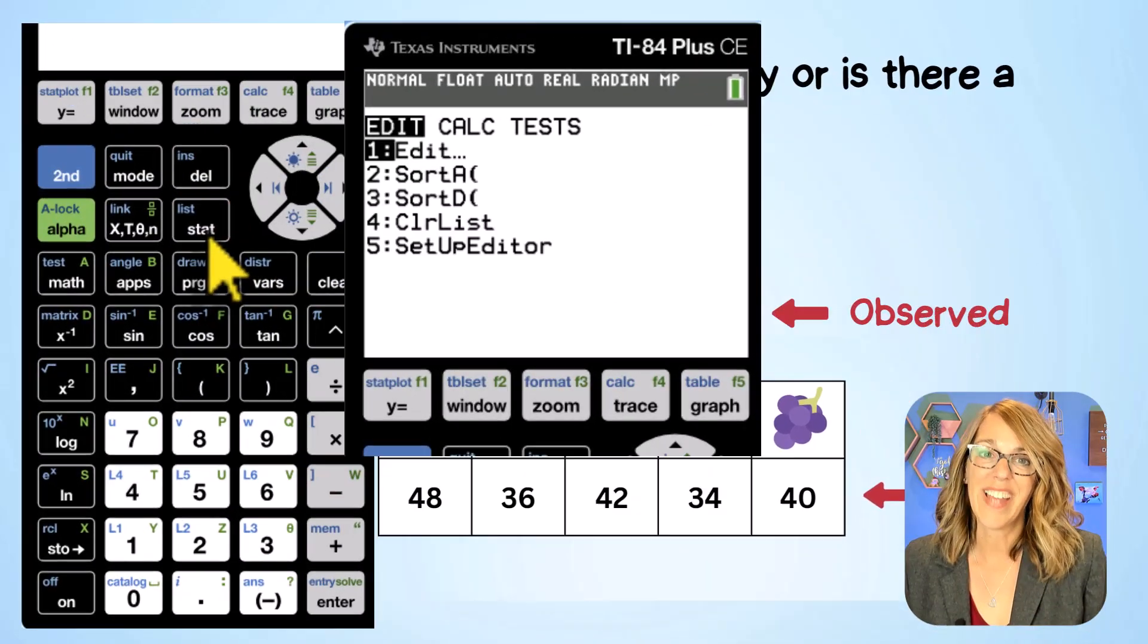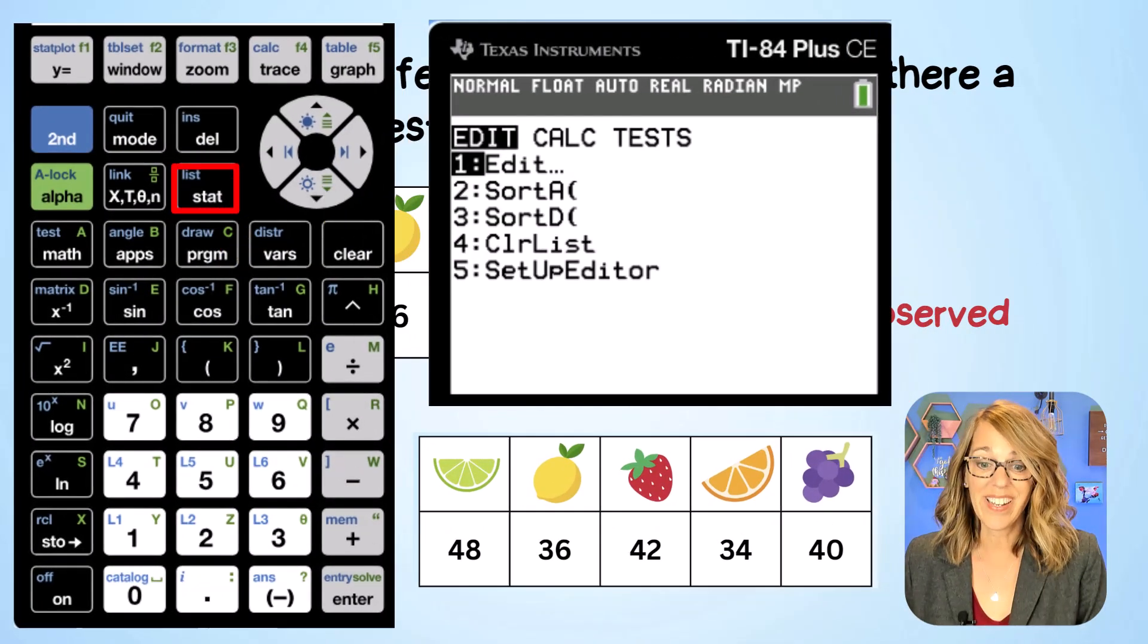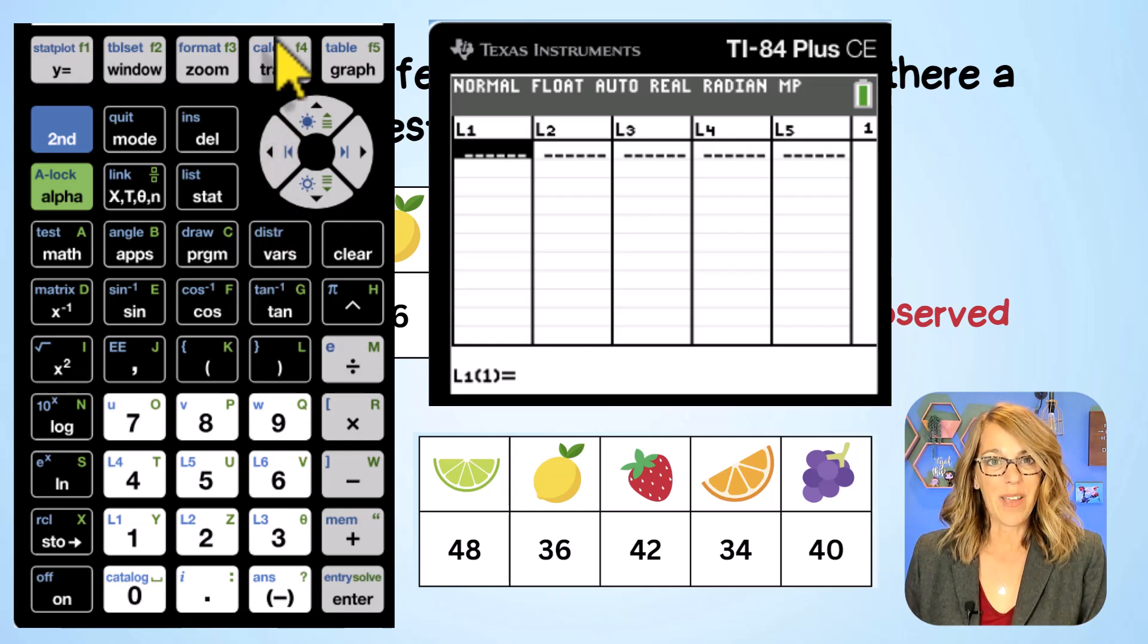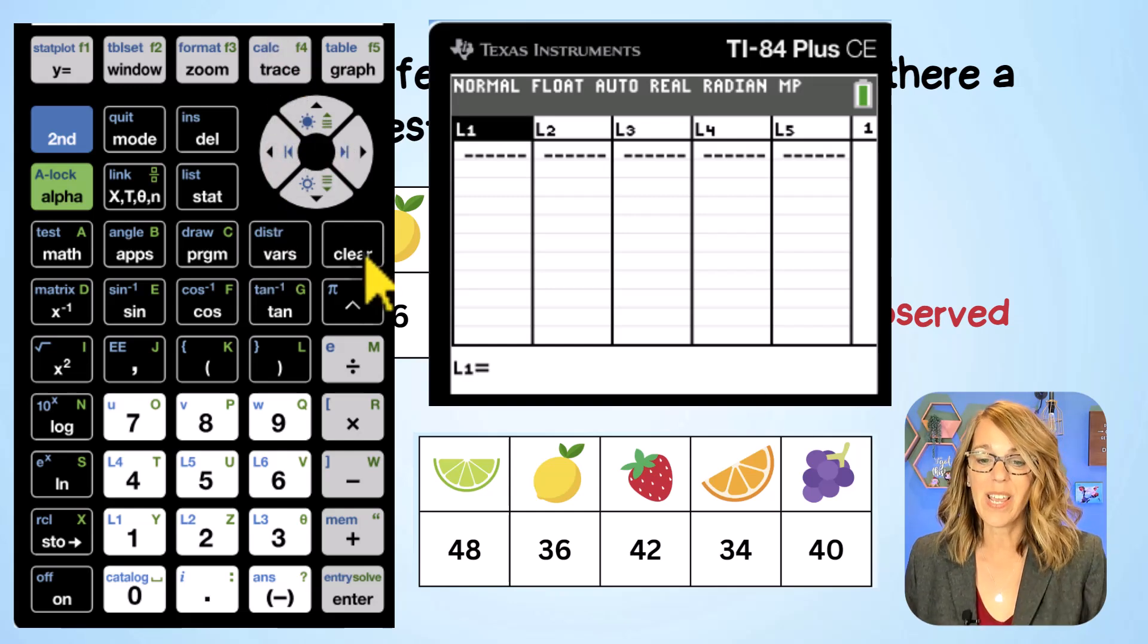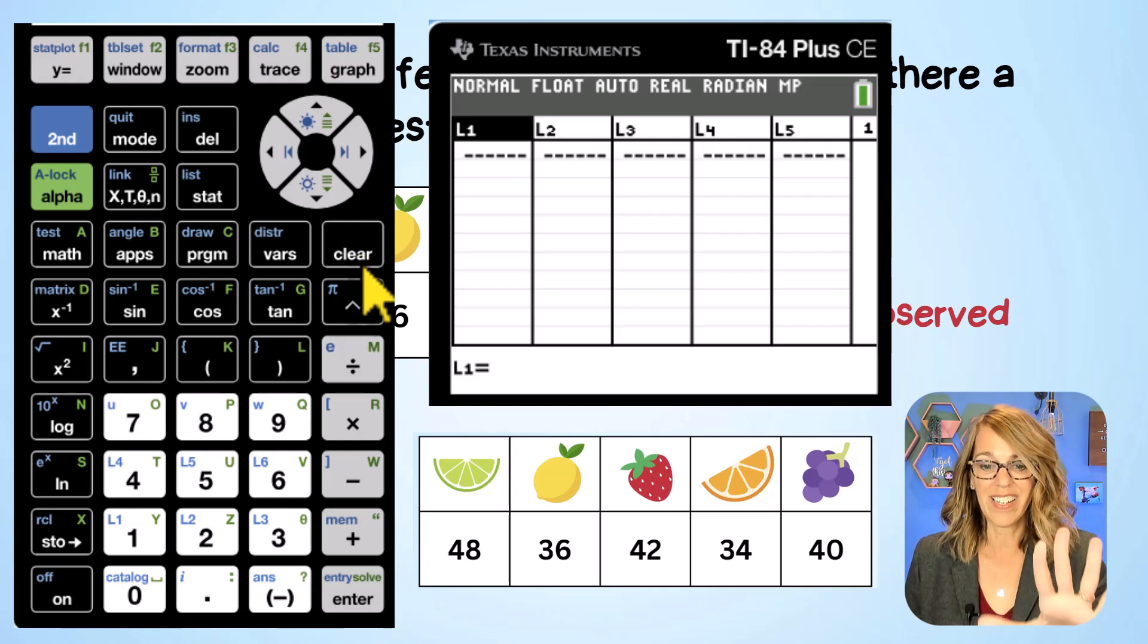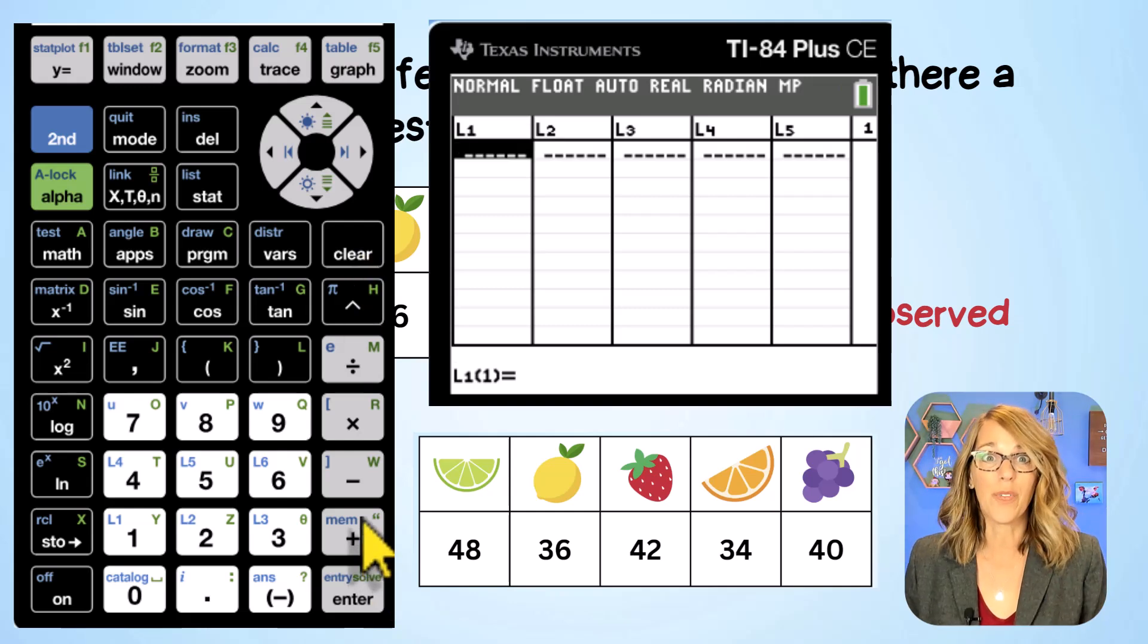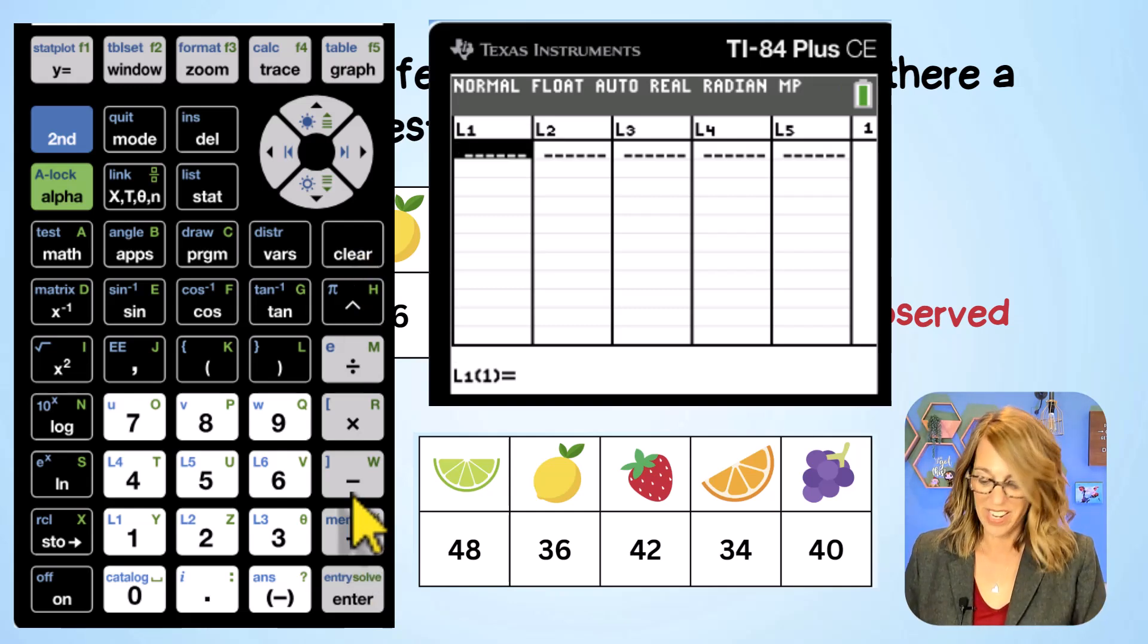We're going to go right to the stat menu and then we do want to edit, so we're going to hit enter here and my list is already empty. If your list one isn't empty, you want to arrow up to the list name, hit clear not delete, hit clear and then enter. Mine was already ready to go. Let's go ahead and enter in those values.